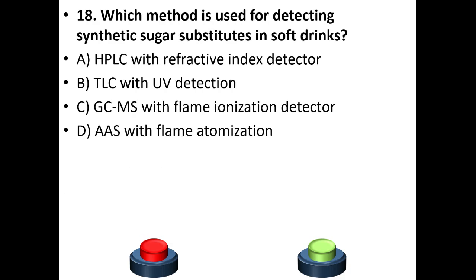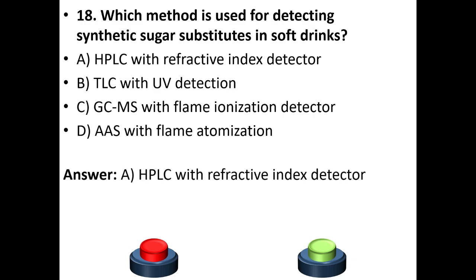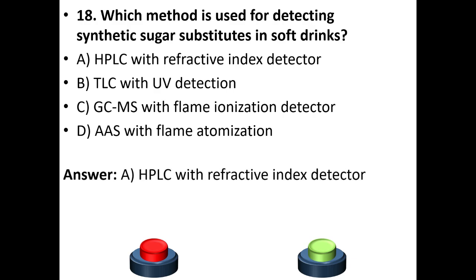Eighteenth question: Which method is used for detecting synthetic sugar substitutes in soft drinks? A. HPLC with refractive index detector. B. TLC with UV detector. C. GC-MS with flame ionization detector. D. AAS with flame atomization. Your answer is option A: HPLC with refractive index detector.